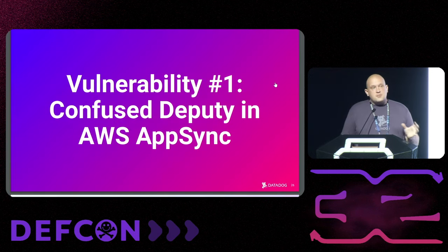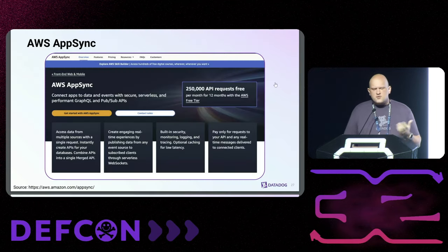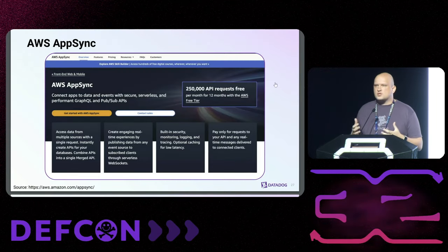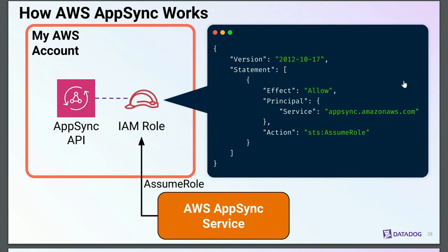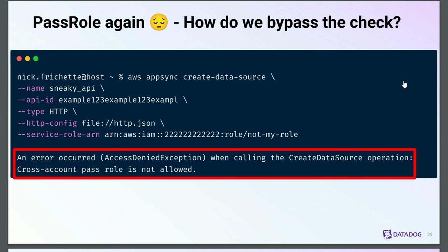The first vulnerability is a confused deputy vuln in AWS AppSync. AppSync is a managed GraphQL service offered by AWS that allows you to quickly and easily build GraphQL APIs. The way it works is similar to Lambda — you create an AppSync API in your account, configure it, set your schema, and as part of setting your data source, a role is created that by default has a trust policy back to the AppSync service. When your AppSync API runs, the AppSync service assumes that role and does whatever the API is supposed to do. And again, if you try to pass a role outside of your account, cross-account pass role is not allowed.